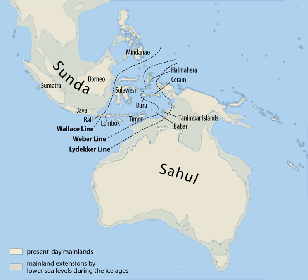Sundaland is a biogeographical region of southeastern Asia corresponding to a larger landmass that was exposed throughout the last 2.6 million years during periods when sea levels were lower. It includes the Malay Peninsula on the Asian mainland, as well as the large islands of Borneo, Java, and Sumatra and their surrounding islands.